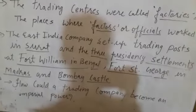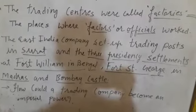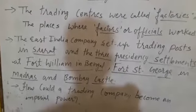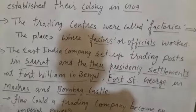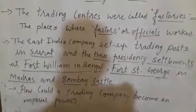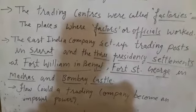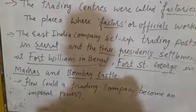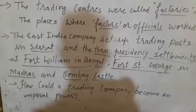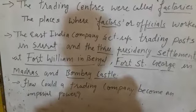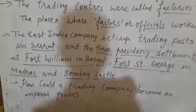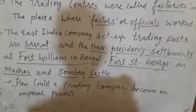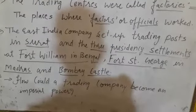Britishers established friendly relations with the local princes to further their profit. They wanted to enter into the areas or territories of local rulers, so Britishers assured that they were friends. The Indian rulers signed alliances — meaning agreements or treaties — with Britishers to secure the help of the English military to settle their internal rivalries. British took advantage of the situation.